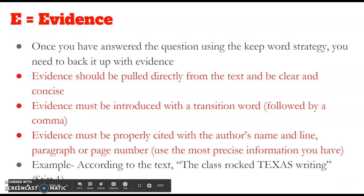So let's look at the letter E in Texas. E stands for Evidence. Once you have answered the question using the keep words strategy, you need to back it up with evidence. Now, evidence should be pulled directly from the text and be clear and concise. This is where you are using the author's thoughts and words from maybe a book, magazine, or short article that you've read. You need to back up your Topic Sentence with evidence. Evidence must be introduced with transition words, followed by a comma. Next, evidence must be properly cited with the author's name and line, paragraph, or page number on which you found that evidence. You must be precise here, otherwise you're going to be guilty of committing plagiarism.